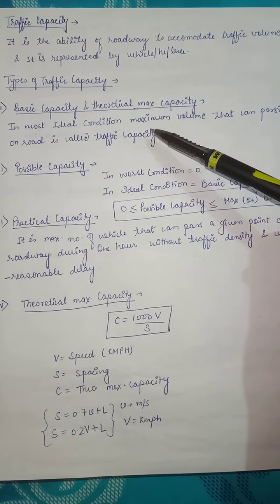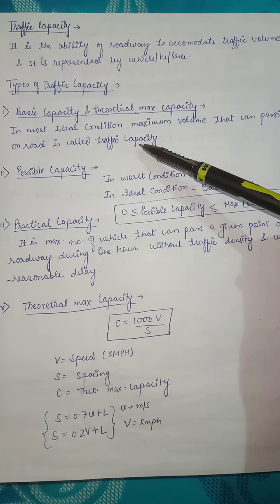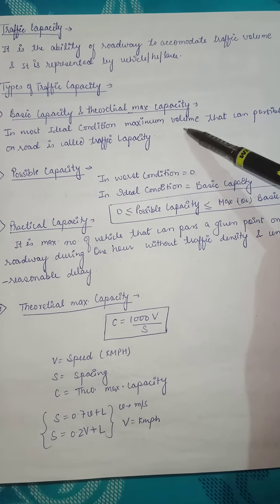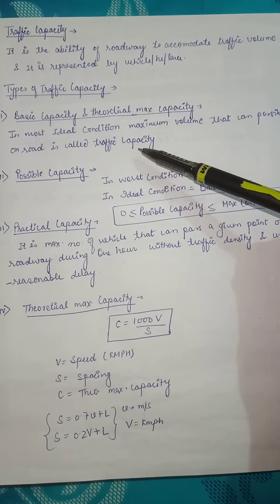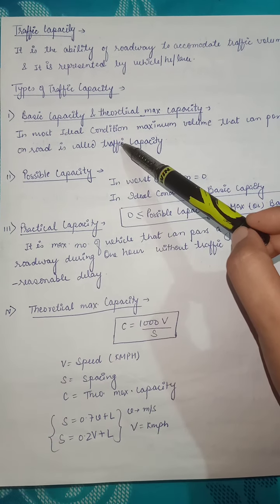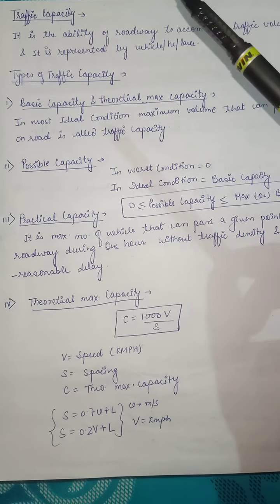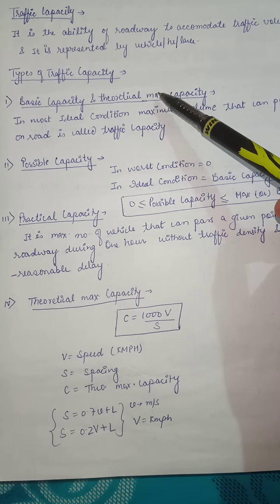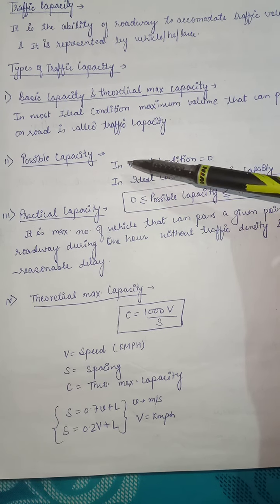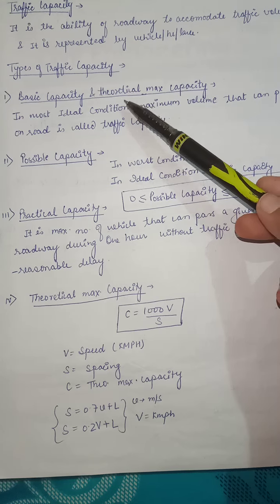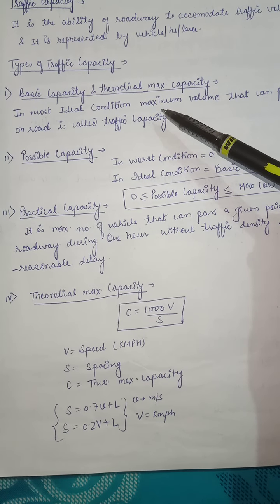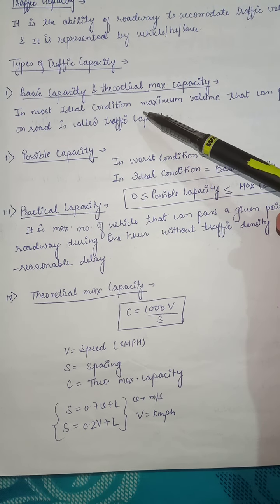Basic capacity means the maximum volume that can be possible on a road — this is called theoretical maximum capacity. This is the most ideal condition. It is not actually possible that all vehicles will accumulate in large numbers; this is theoretical.